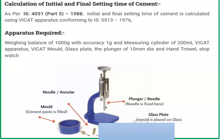The initial and final setting time of cement is calculated using the Vicat apparatus confirming to IS code. The apparatus required includes a Vicat apparatus, a weighing balance of 1000 grams with accuracy of 1 gram, a measuring cylinder of around 200 ml, a Vicat mold, a glass plate, a plunger or needle of 10 mm diameter, a hand trowel for mixing, and a stopwatch.